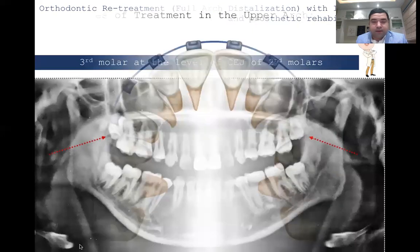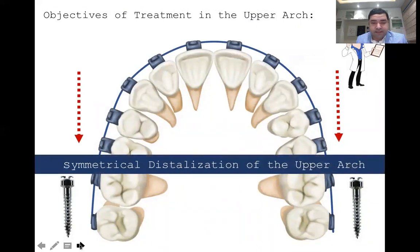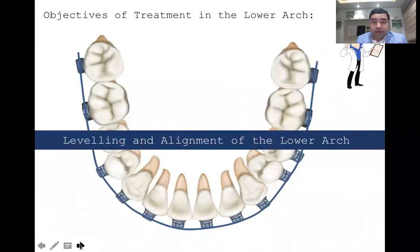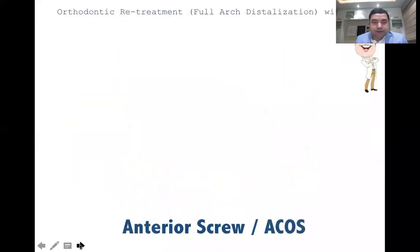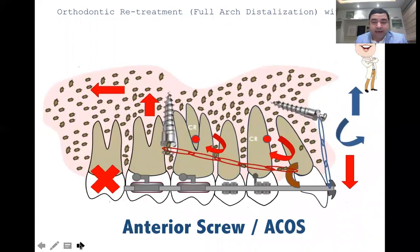The objective in the upper arch is symmetrical distalization of the upper arch by extraction of the upper third molars 1.8 and 2.8. In the lower arch, leveling and alignment is required because of the deep bite, and the alignment needs to be recontoured. We are using an anterior screw or an accentuated curve of Spee in the archwire. This is similar to the previous case with third molar extraction and distalization, but here we are looking at a little less intrusive force because the gummy smile is not as severe. Therefore the hook is not inverted but upright — mild intrusive force and more distalization force is required. An anterior screw or accentuated curve of Spee in the wire takes care of the anterior intrusive component to correct the anterior gummy smile.